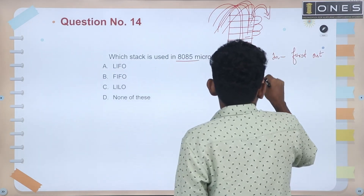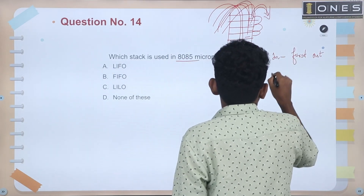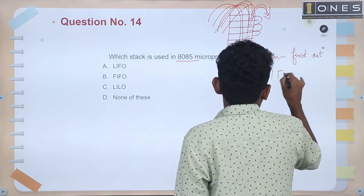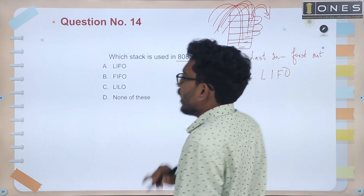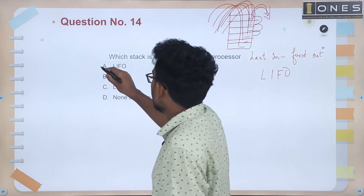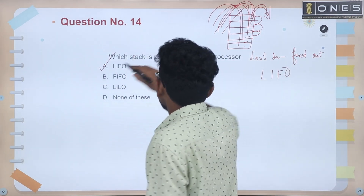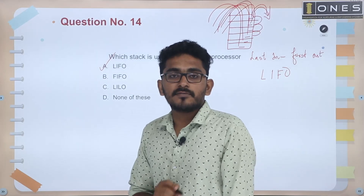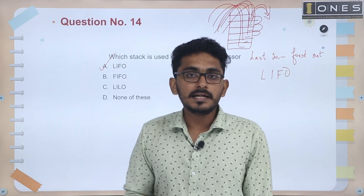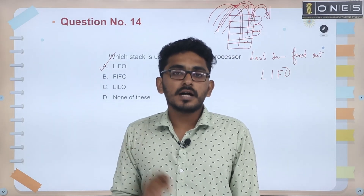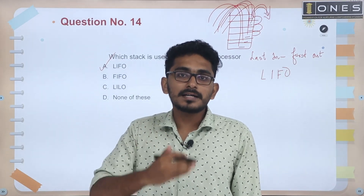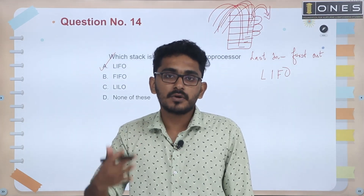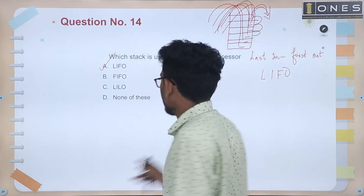Last In, First Out: L = Last, I = In, F = First, O = Out. The 8085 microprocessor follows the LIFO stack — Last In, First Out.